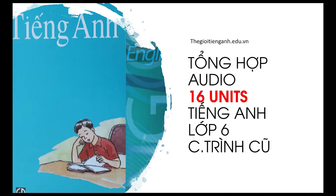Listen and repeat, then practice the dialogue with a partner. What time is it, Ba? It's eight o'clock. We're late for school. Listen and repeat. What time is it? It's ten o'clock. It's ten ten. It's ten fifteen. It's ten thirty. It's ten forty-five. It's ten fifty.